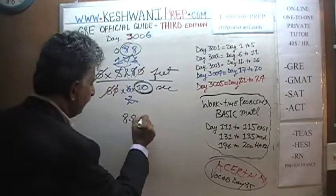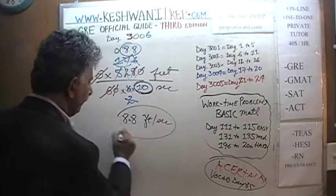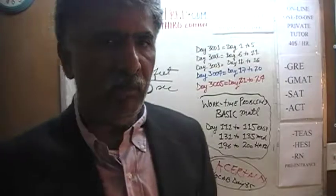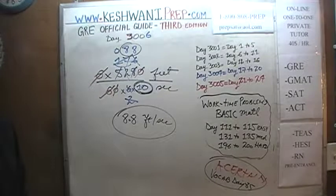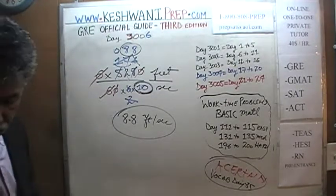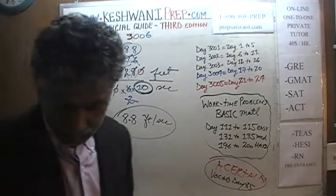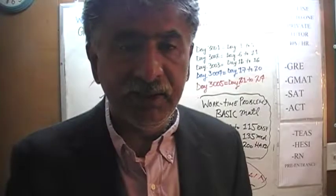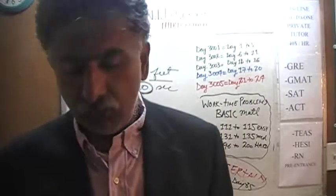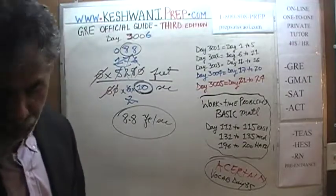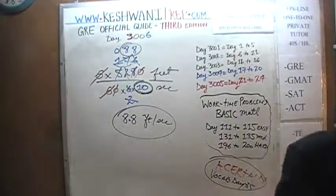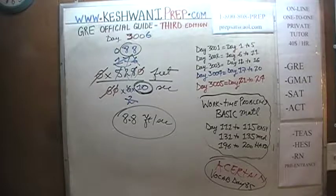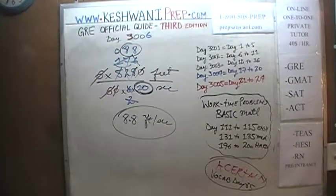The answer is 8.8 feet per second. A speed of 6 miles per hour translates into about 8.8 feet every second. That was it for today. Work on Basic Math day 141 and Basic Math day 142 — there are similar problems. Pause the video and work on your own, then compare your work against what we do together. I'll see you tomorrow.